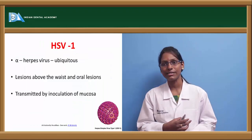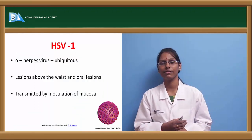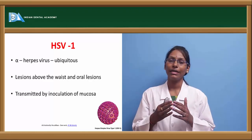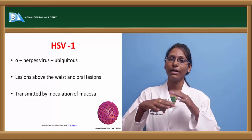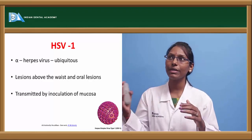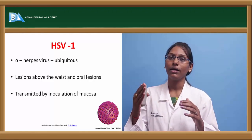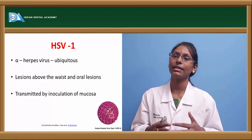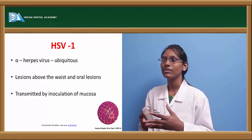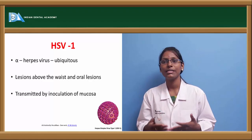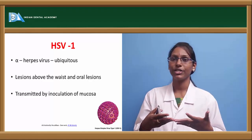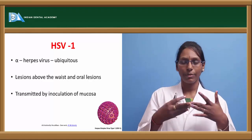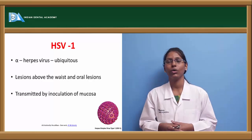Coming to HSV1: it is usually a ubiquitous virus — that is, it is omnipresent. About 30 to 100% seropositivity is seen in case of HSV1 across the world. As already mentioned, these lesions are usually seen above the waist or the abdominal region and most commonly seen in the oral cavity.